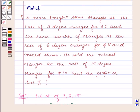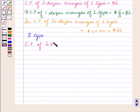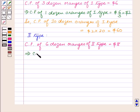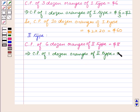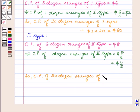Now for the second type, 6 dozen oranges cost $8, which implies the cost price of 1 dozen oranges of the second type is equal to 8 divided by 6, which is equal to $4 by 3. So the cost price of 30 dozen oranges of the second type is equal to 4 by 3 into 30, which is equal to $40.